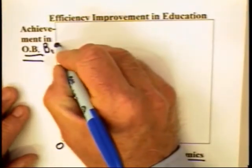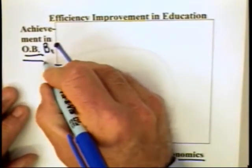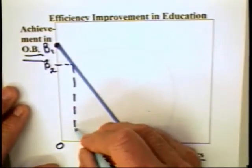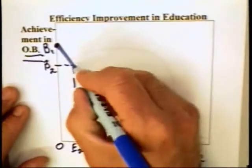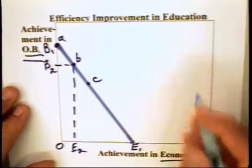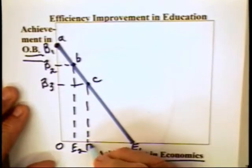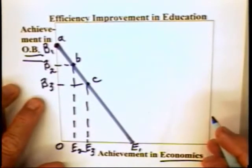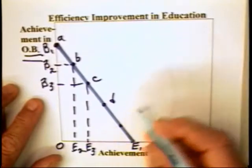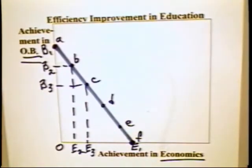The individual, if at combination B1, can reduce the amount of time spent on organizational behavior and in doing so learn some economics. The individual can choose combination A, B, or combination C — that is, B3 of organizational behavior and E3 of economics. By the same token, the person can choose combination D, E, and so on down to combination F, in which they learn only economics.